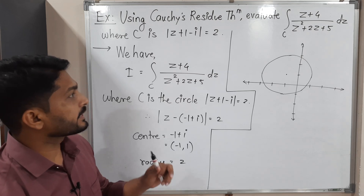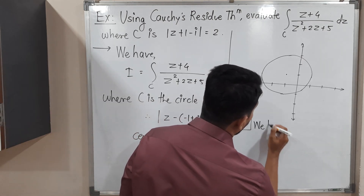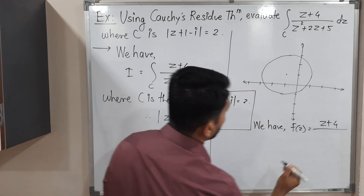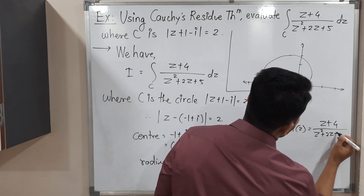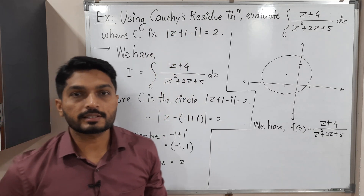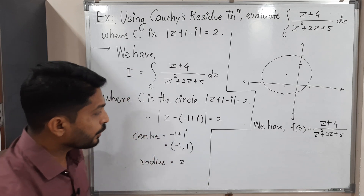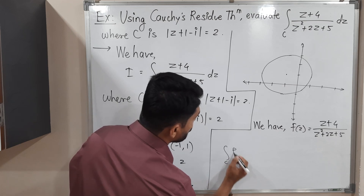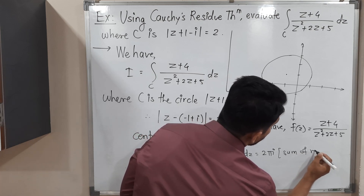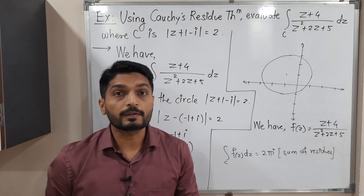After drawing the circle, we consider the function — whatever is inside the integral. Our f(z) = (z + 4) / (z² + 2z + 5). We are asked to solve this integration with the help of Cauchy's residue theorem. The theorem states that the integration over C of f(z) dz equals 2πi times the sum of residues.